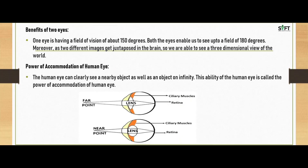The power of accommodation of the human eye: the human eye can clearly see a nearby object as well as an object at infinity. This ability is called the power of accommodation of the human eye. You can go through the image where we are able to see both the far point and the near point.